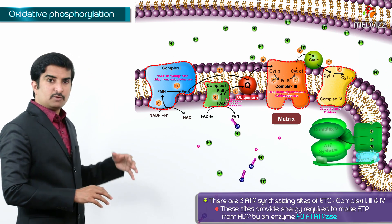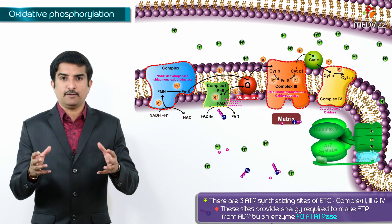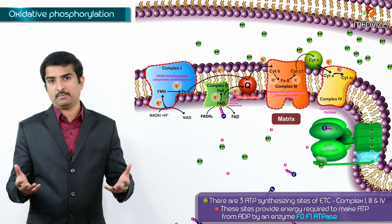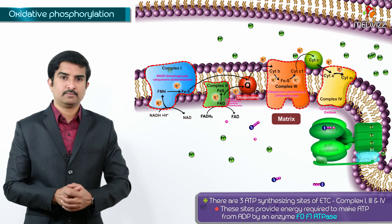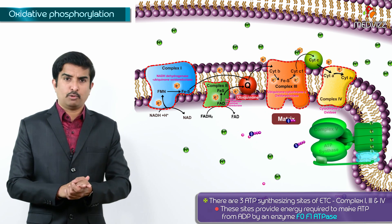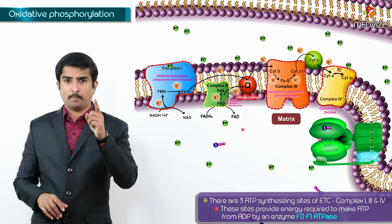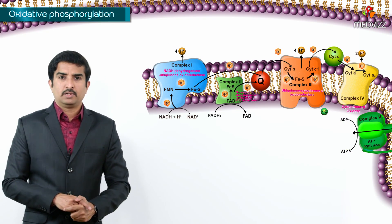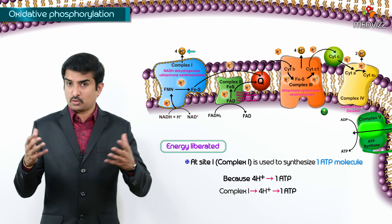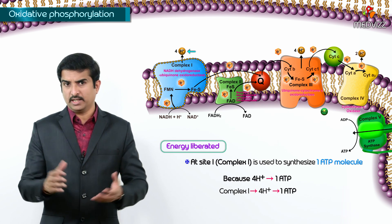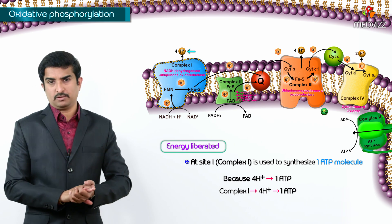These sites provide the energy required to make ATP from ADP by the enzyme FOF1ATPase. Note an important point: there is no ATP formation at complex 2. The energy liberated at site 1, which is complex 1, is used to synthesize one ATP molecule.